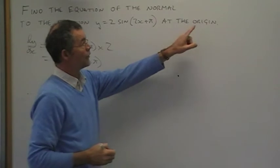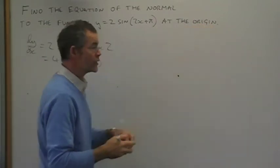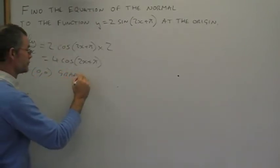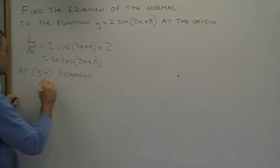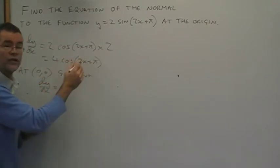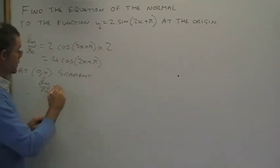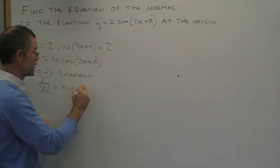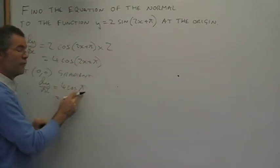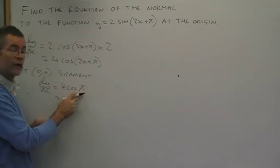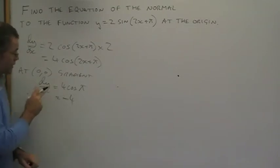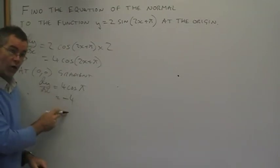We are now at point (0,0), which is the origin. So at point (0,0), the gradient dy/dx equals, we put in 0 instead of the x. 4 cos(2 times 0 is 0, just got π there). Cosine of π is negative 1, negative 1 times 4 is negative 4. That is the gradient of the tangent at the origin.